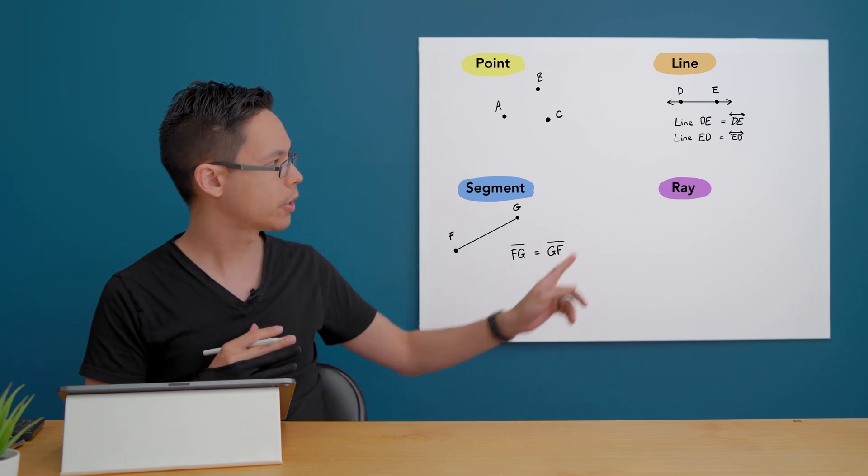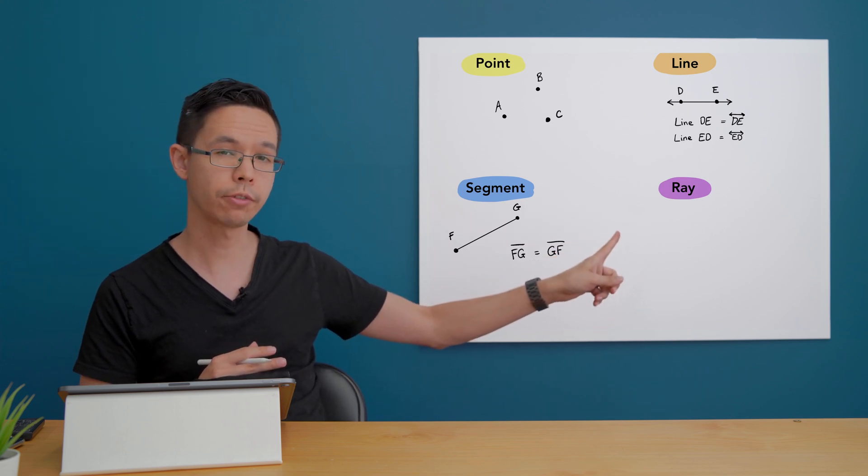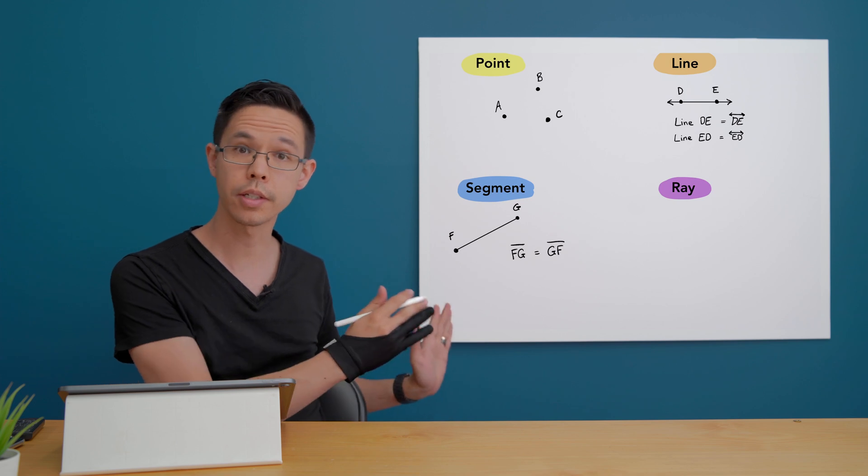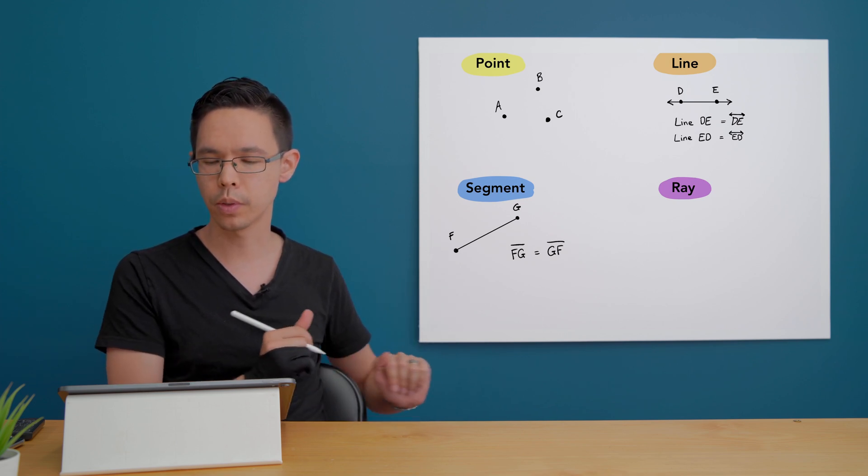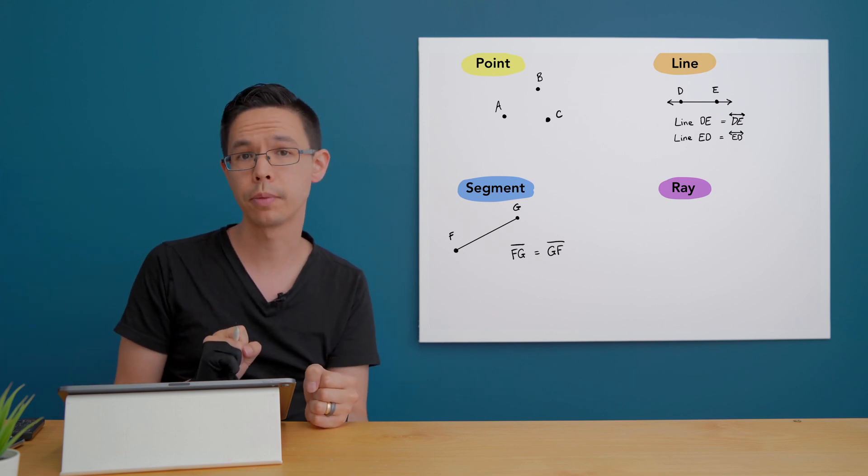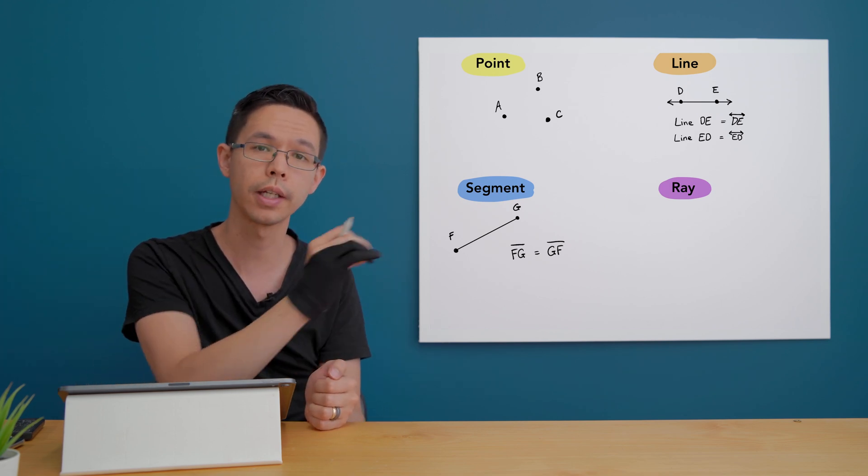A ray is like a hybrid between the line which extends forever in both directions and segments which it doesn't extend at all. So with a ray you can imagine it starts from a defined point and then it extends forever from there usually running through another point.